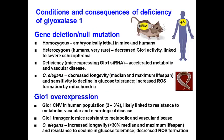Looking at the conditions and consequences of deficiency of glyoxalase 1 imposed endogenously or experimentally: homozygous deletion of glyoxalase 1 is embryonically lethal in mice and humans. Heterozygous deletion is rare in humans, but it is linked to severe schizophrenia.